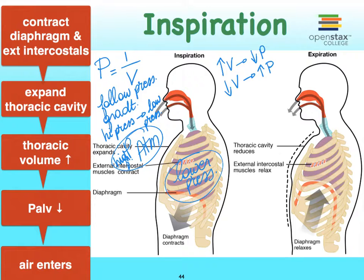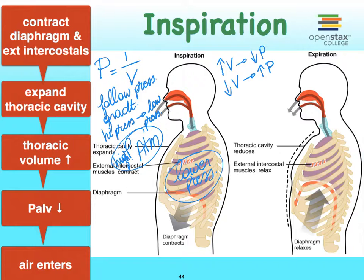We can increase the size of our thoracic cavity, and by this we recruit some muscles — more specifically, two kinds of muscles. We're first going to contract the diaphragm. At rest, the diaphragm is dome-shaped, and when we contract it, it's going to move down, therefore stretching out and lengthening our thoracic cavity, beginning to increase its volume.